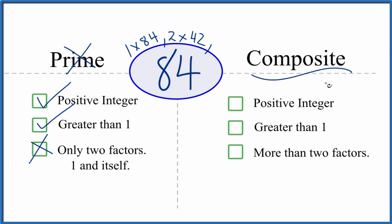But is it composite? Well, it's a positive integer, greater than 1. And are there more than two factors? Yes, more than two factors and actually quite a few more than I've written here. So 84, it's a composite number.